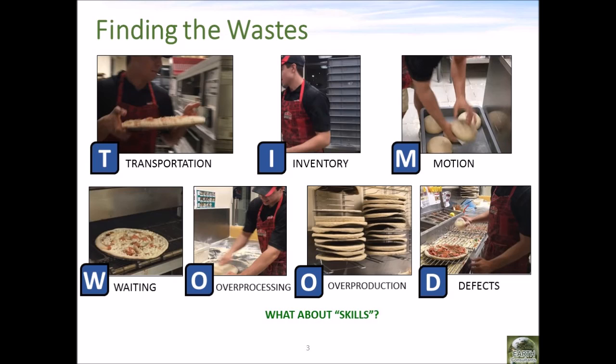Waiting for the pizza to cook in the oven causes a delay in getting the pizza to the customer. Yes, it is a required step, but there may be ways to pre-cook the dough while the toppings are being assembled or other ways to speed up the bake time. For over processing, when using the roller tool, he mentioned to use it eight to ten times, but it looked like he only did it about seven times. Maybe five or six times is sufficient, and more rolls than needed would be over processing. When placing the ingredients on the pizza, he had to readjust them and reset the edge of the dough a couple of times, which is also over processing.